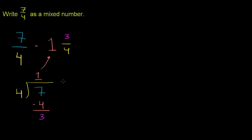Now, it might seem a little bit like voodoo what I just did. I divided 4 into 7, it goes one time, and then the remainder is 3. So I got 1 and 3 fourths. But why does that actually make sense?